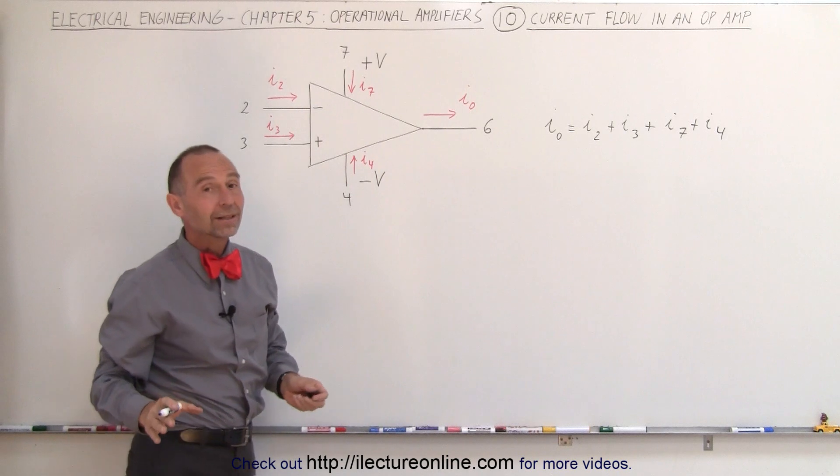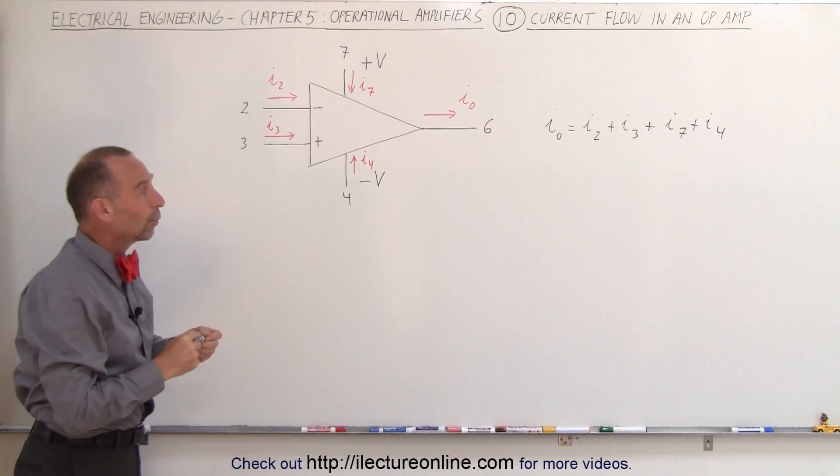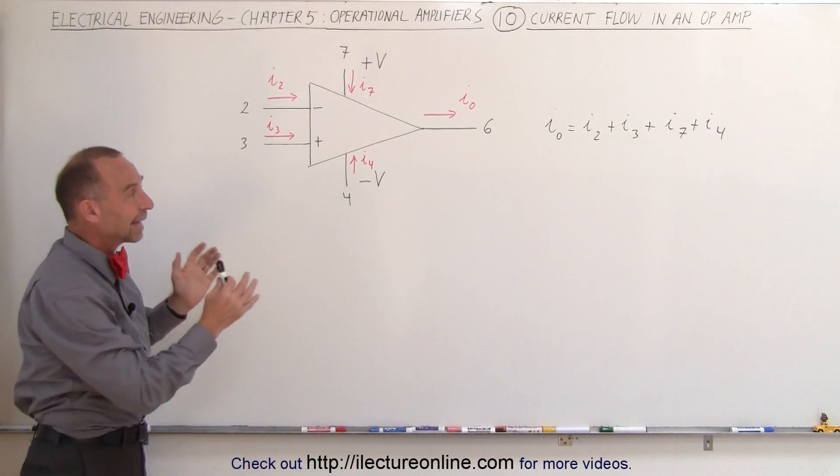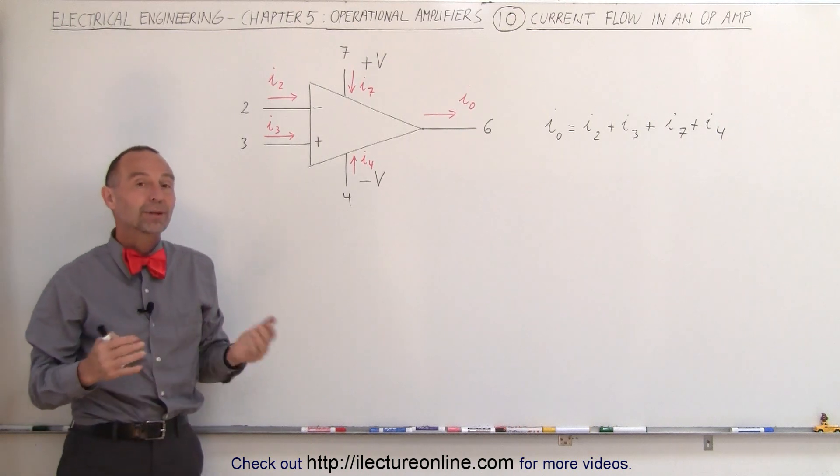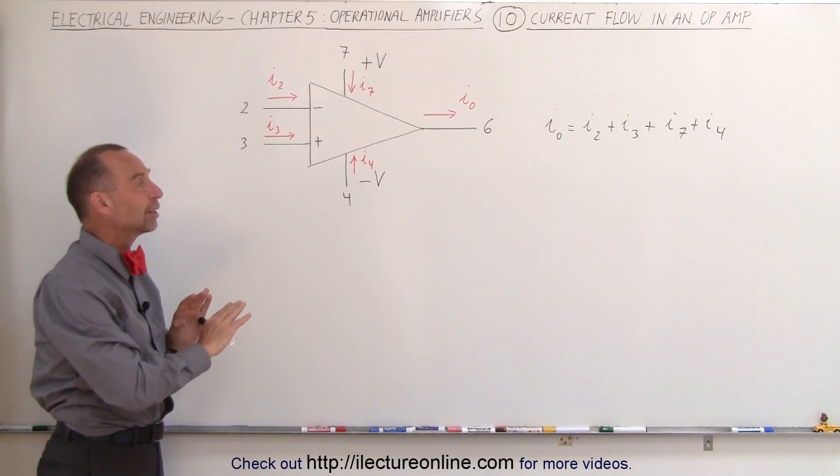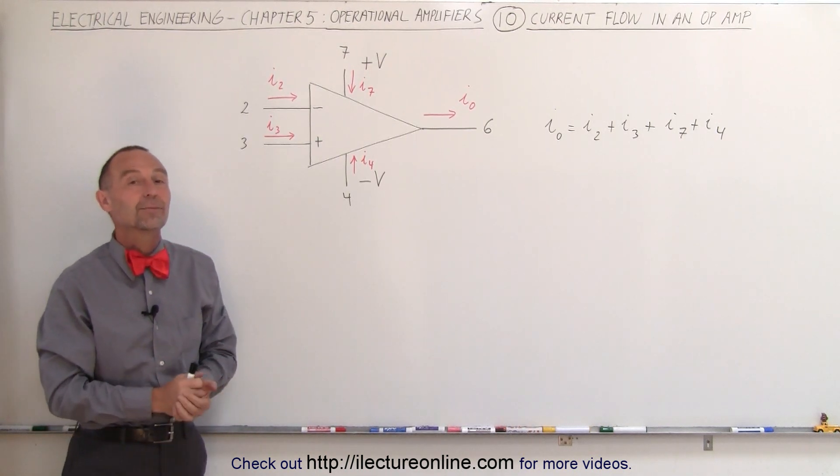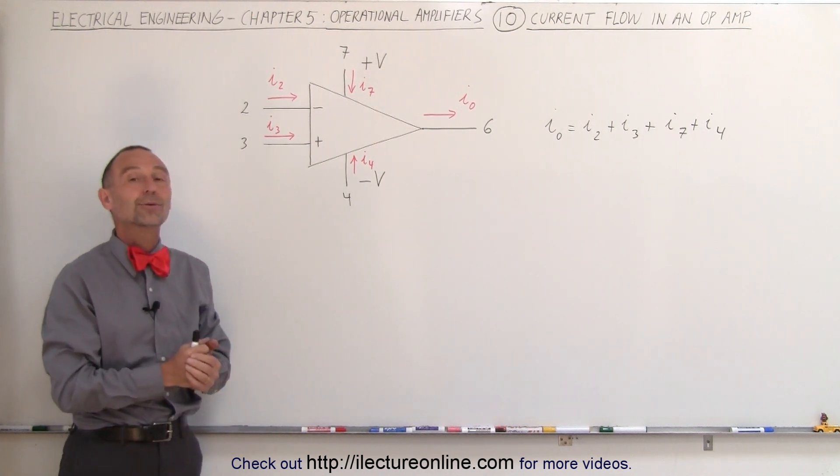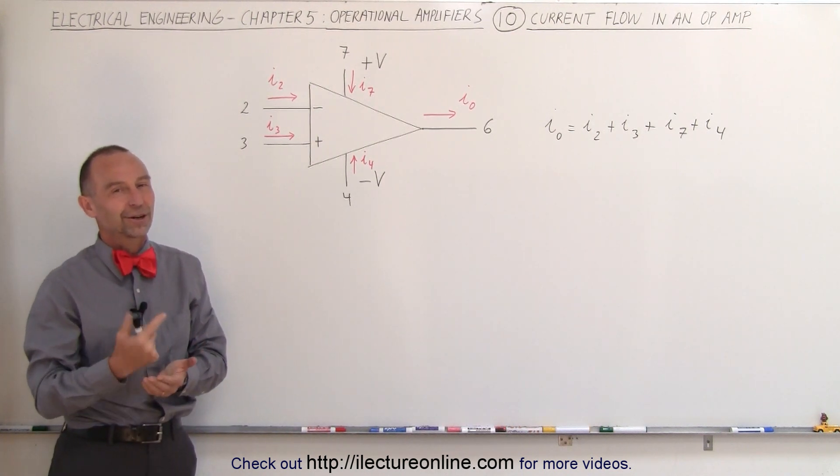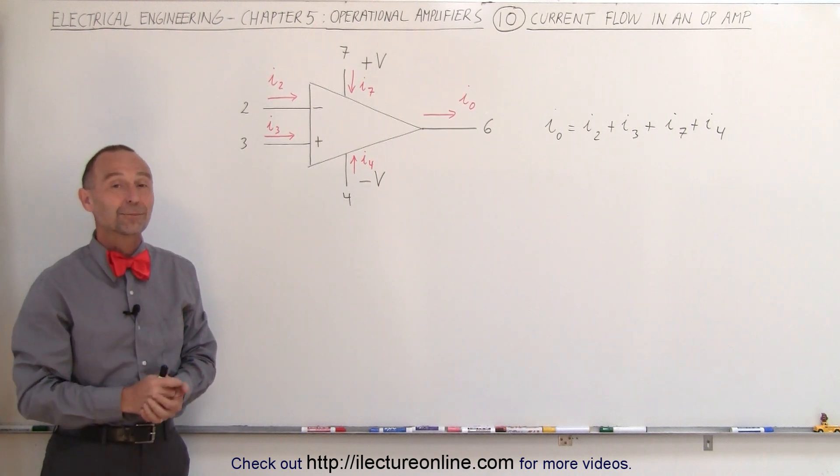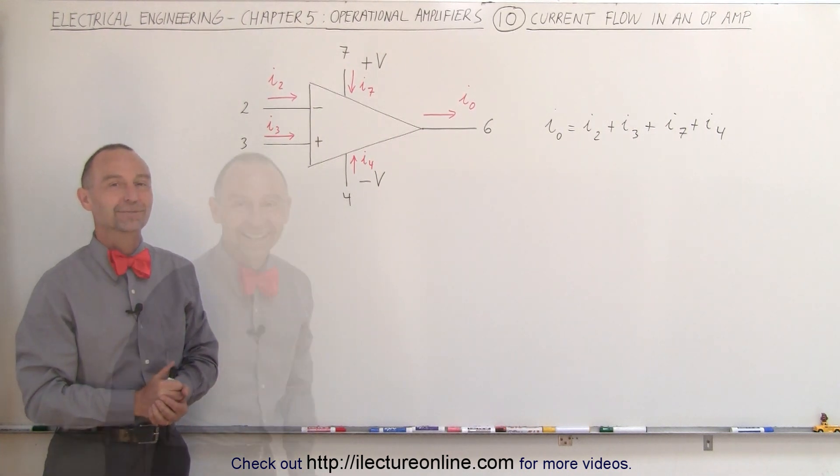So in a real amplifier that is always the case and often we need to take that into account, although for simplicity to work out problems we often ignore those currents and simply set them equal to zero. But now you know about the currents - they are real, they are there, and sometimes we need to take them into account. That's how it's done.